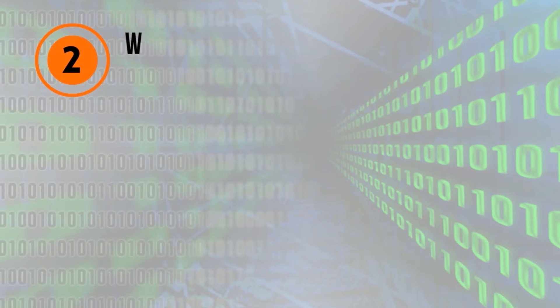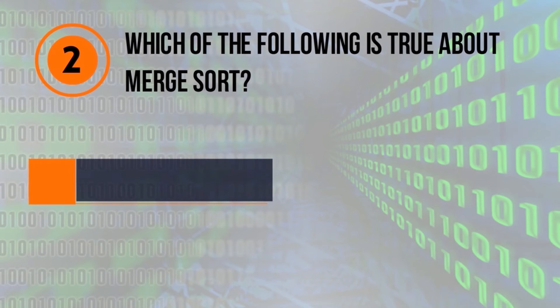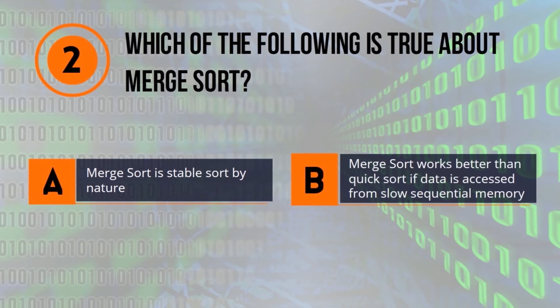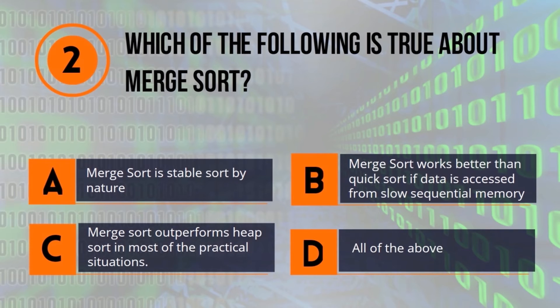Second question: which of the following is correct about merge sort? A: merge sort is stable sort by nature. B: merge sort works better than quicksort if data is accessed from slow sequential memory. C: merge sort outperforms heap sort in most practical situations. D: all of the above. Please click on your chosen answer.